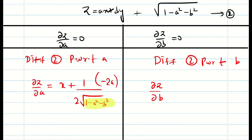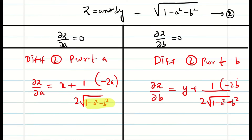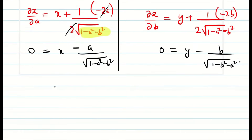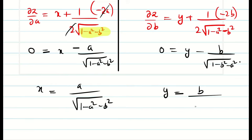Similarly, dou z by dou b is equal to y plus 1 by 2 into square root of 1 minus a square minus b square, times minus 2b. Since we know it is equal to 0, we get x equal to a divided by square root of 1 minus a square minus b square. Similarly, y equal to b divided by square root of 1 minus a square minus b square.